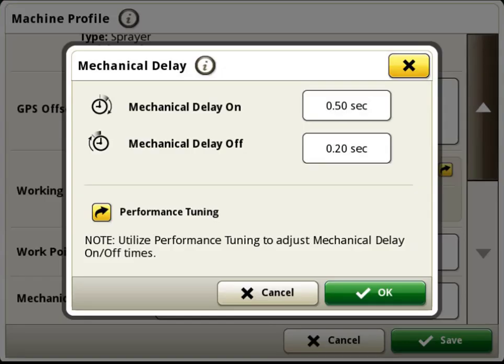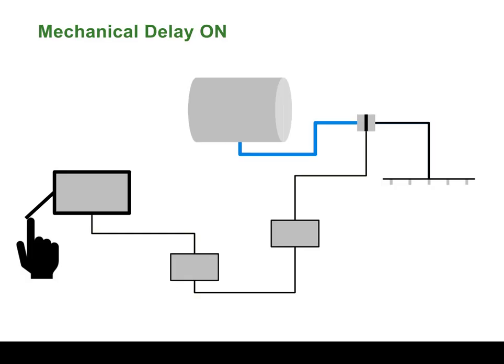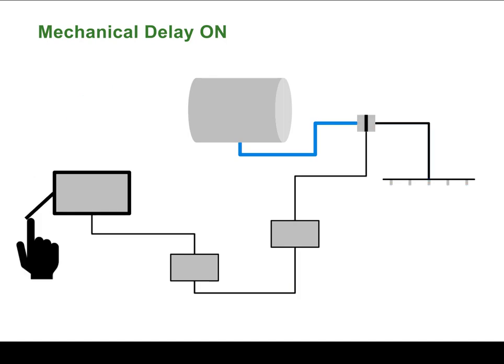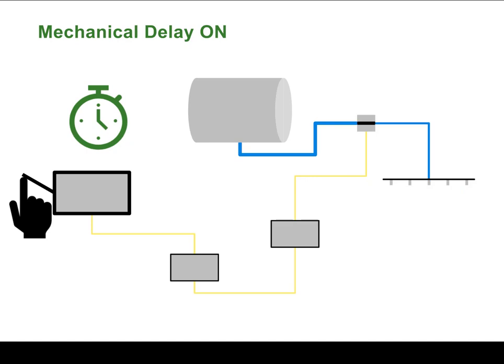Mechanical delay settings are intended to account for the electrical and mechanical system delay. Mechanical delay on time should be measured from the time that it takes to manually turn on seed or product flow to the time when the seed or product is being applied to the crop canopy or ground at the desired rate.